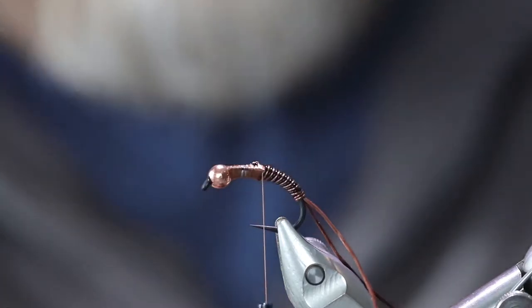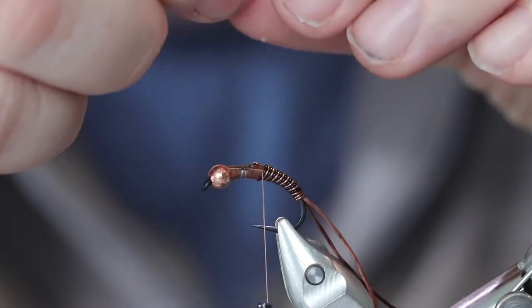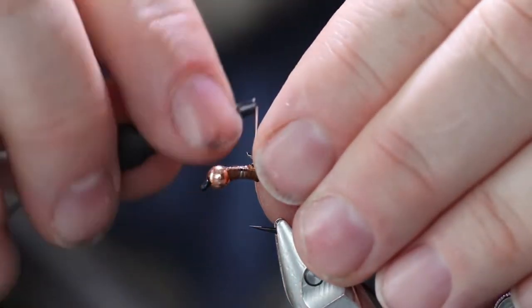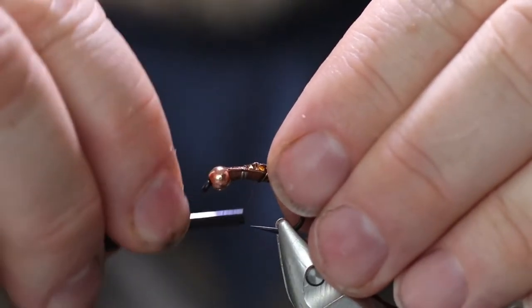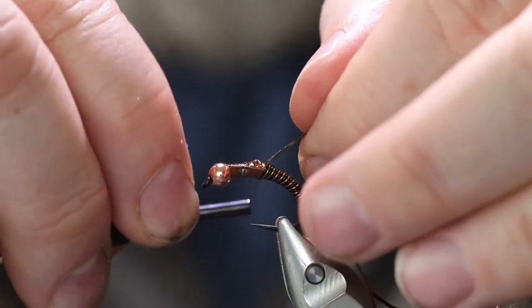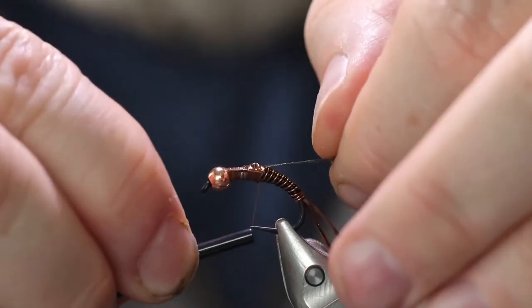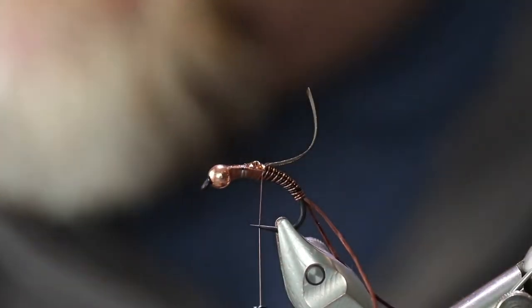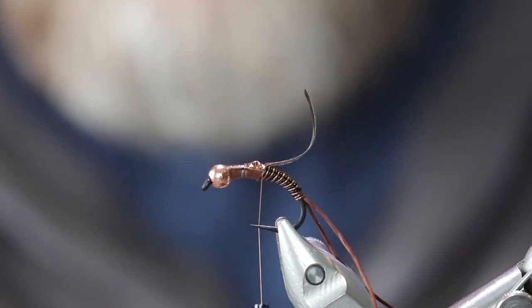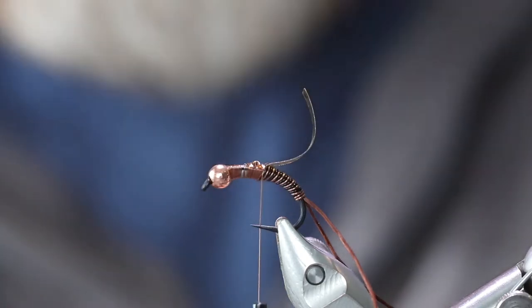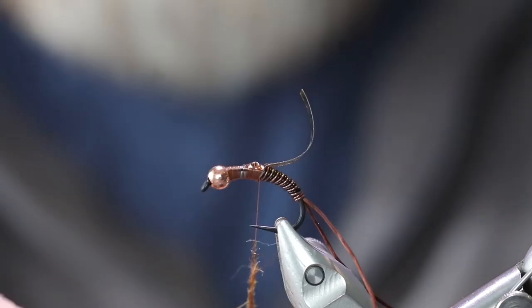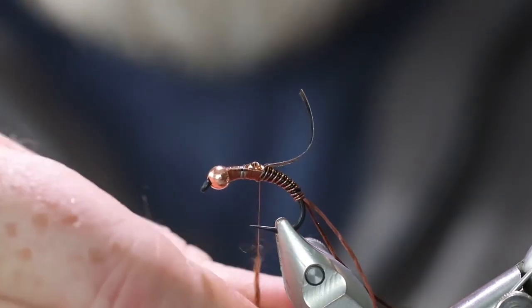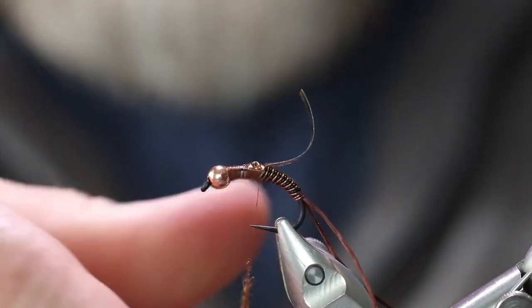You'll want to cut that so that the wing case material so that it's about as wide as your bead. There we go. Now let's tie that in right down to where the wire stops. Now I'm using a brownstone dubbing mix. And we're going to make a loop or two of that on here. And then we're going to tie in another set of rubber legs on it.